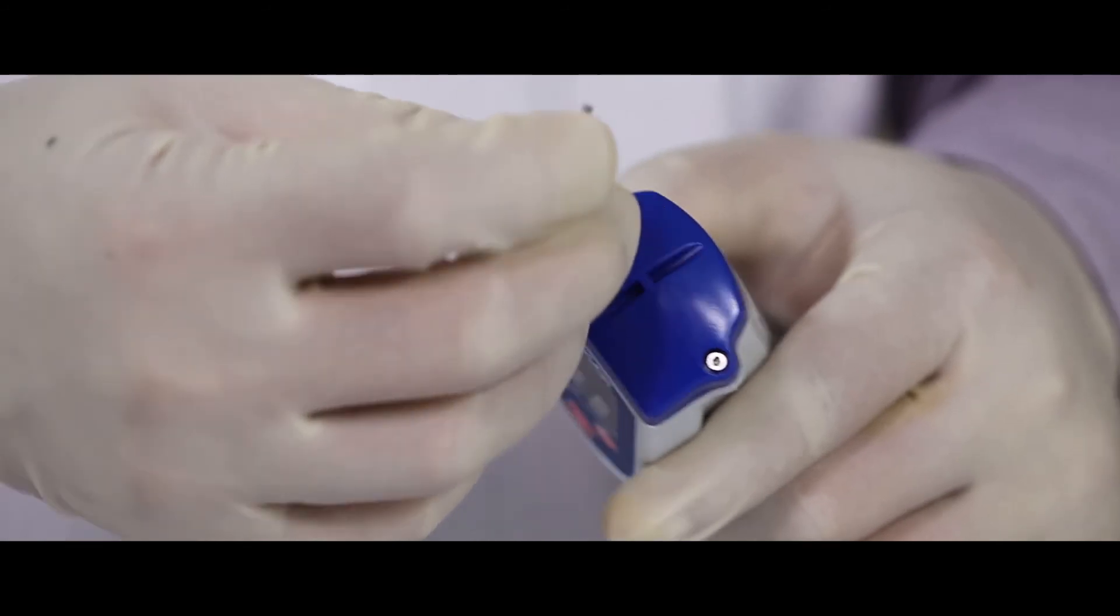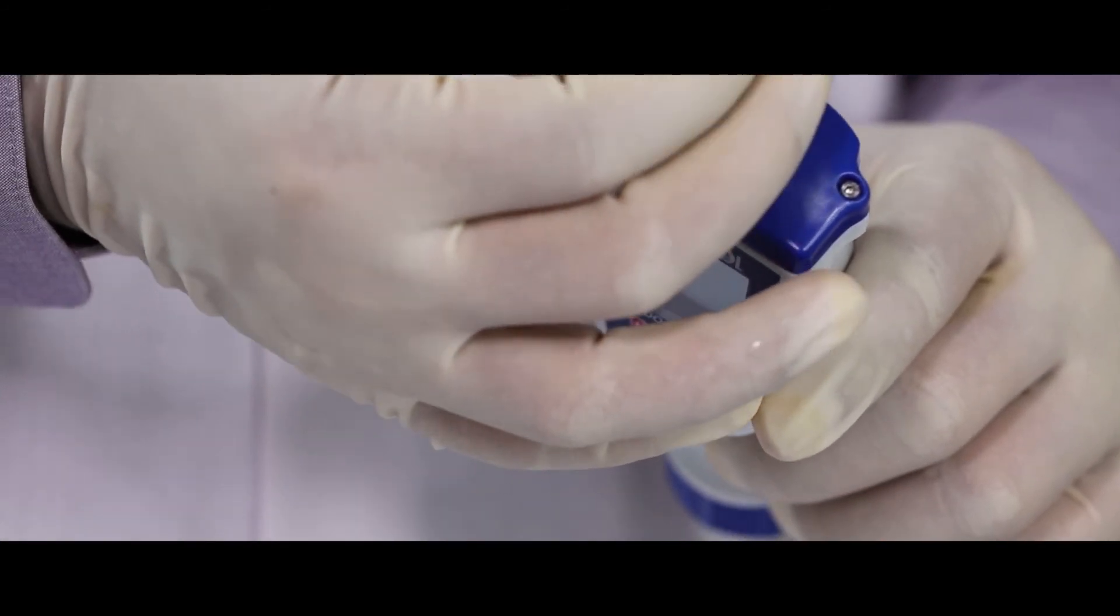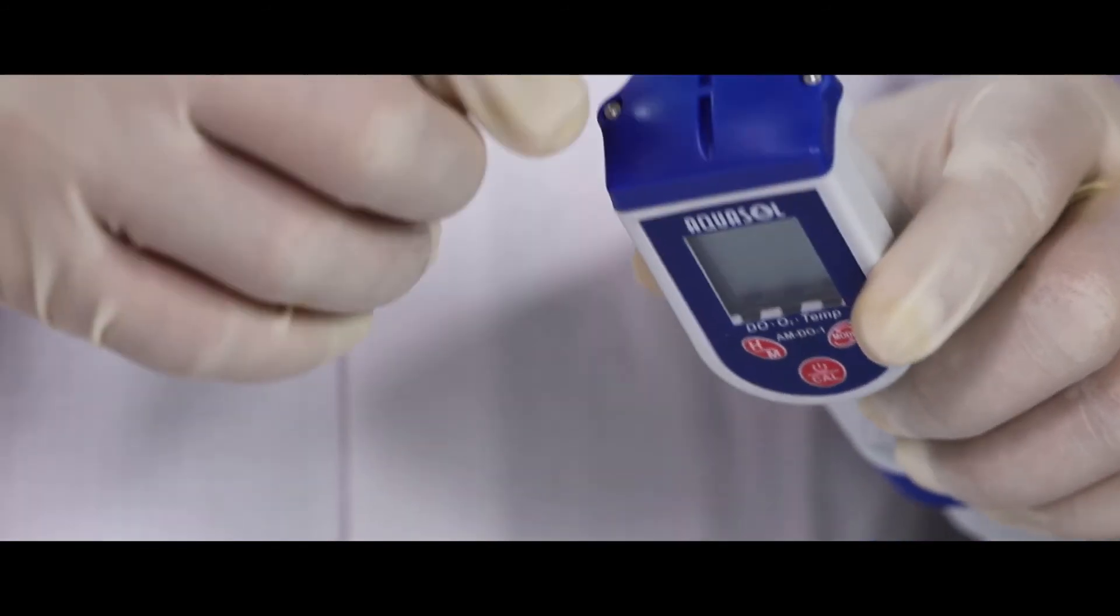Batteries are located on top of the meter. Note the polarities and replace the batteries.